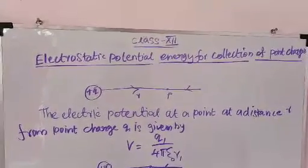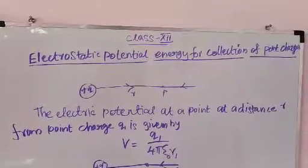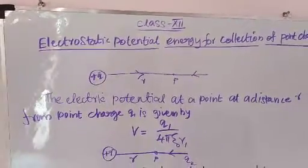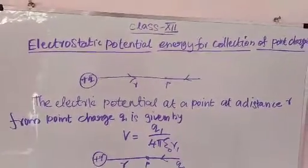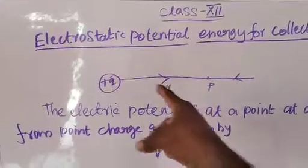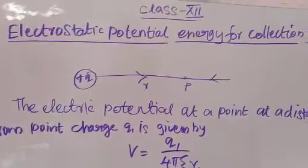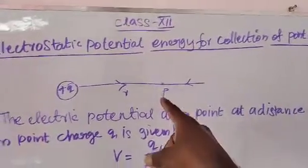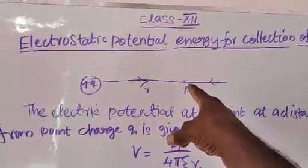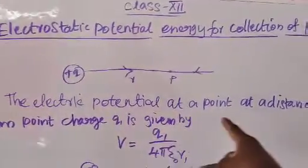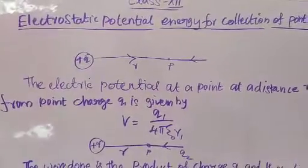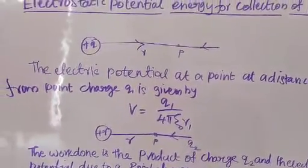In the last class I taught electrostatic potential at a point due to a point charge. To recall: plus Q is placed at rest, and P is a point at distance R from the positive charge. The electric potential at a point distance R from point charge plus Q is given by V equal to Q1 by 4 pi epsilon naught R.